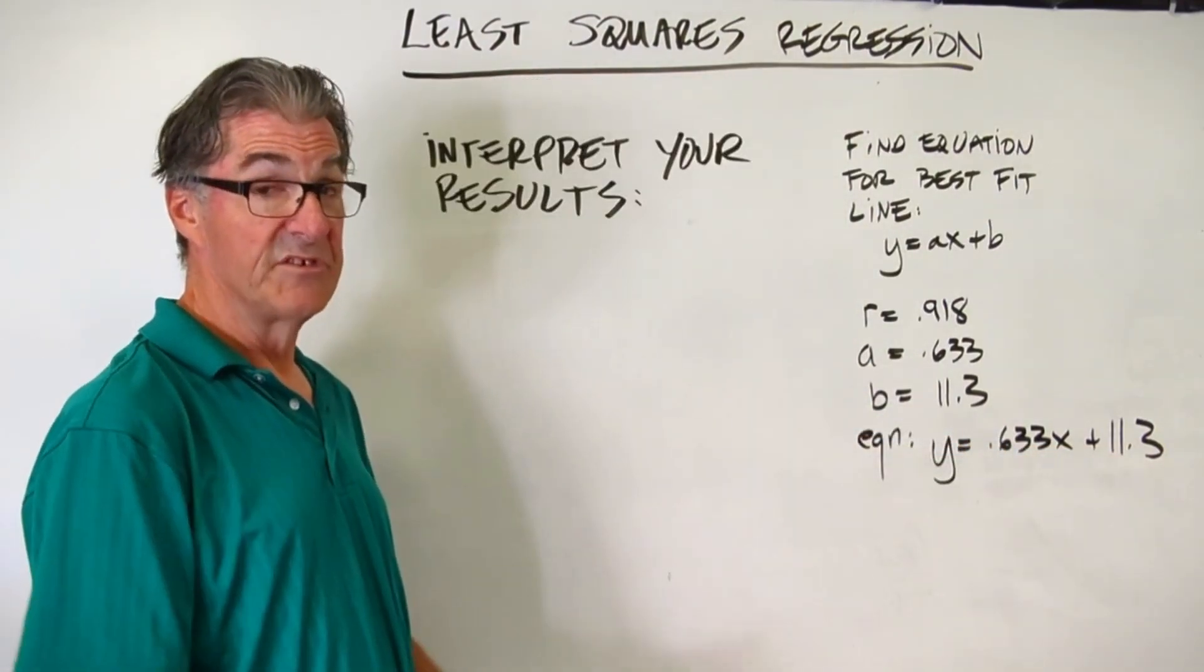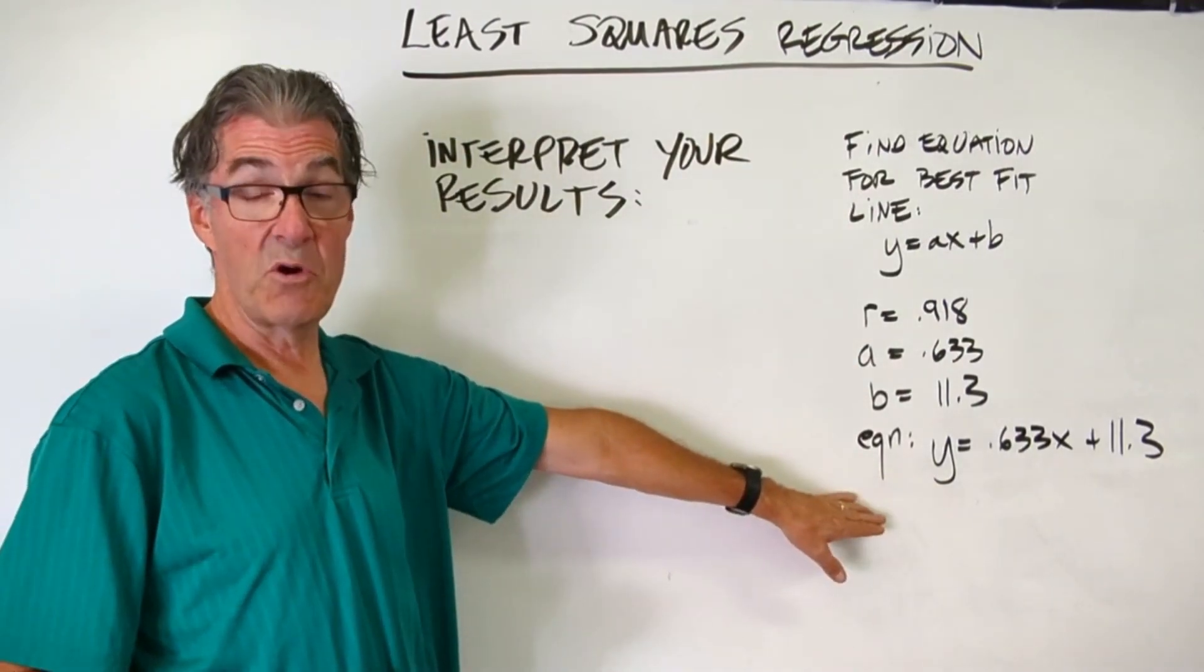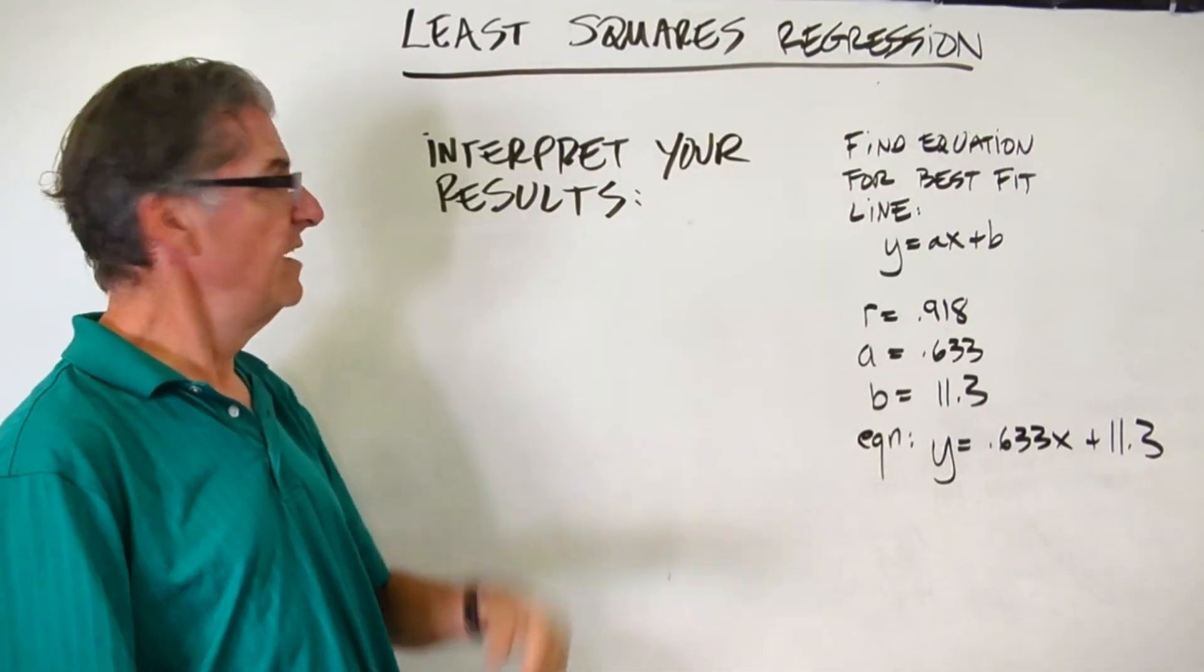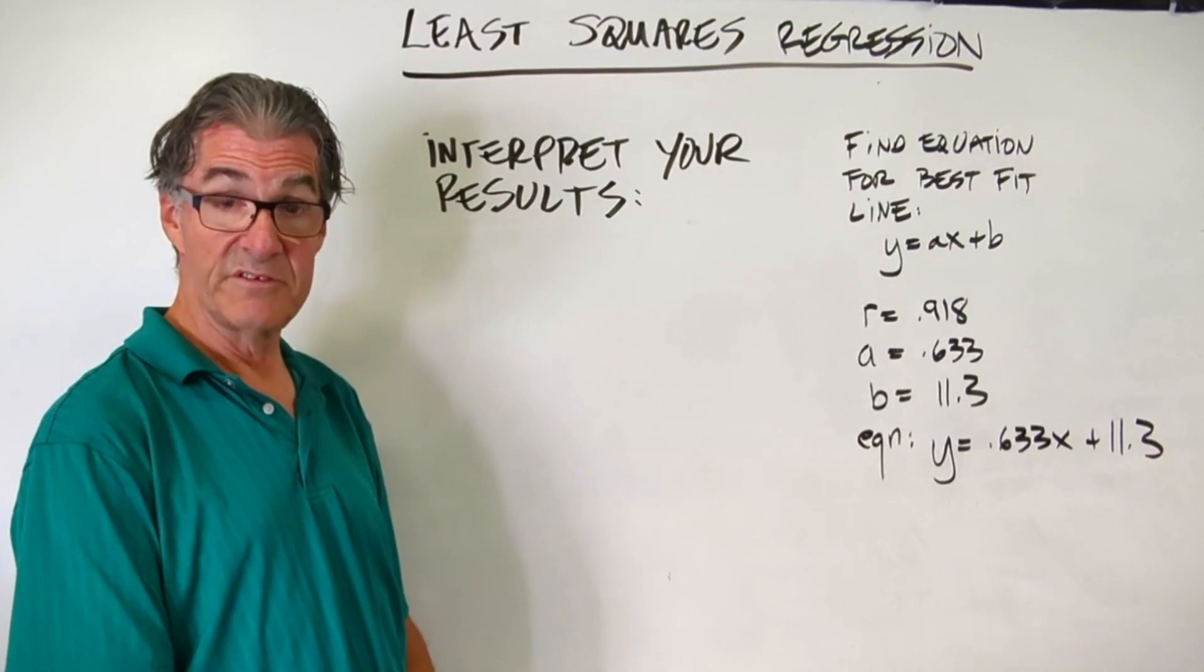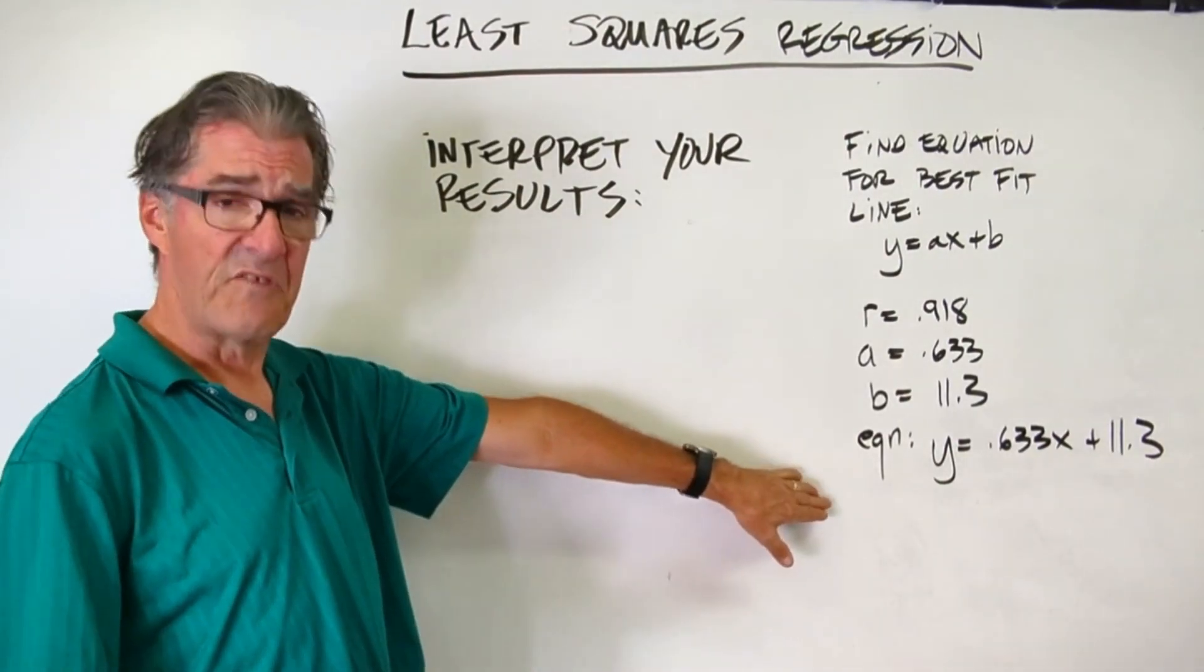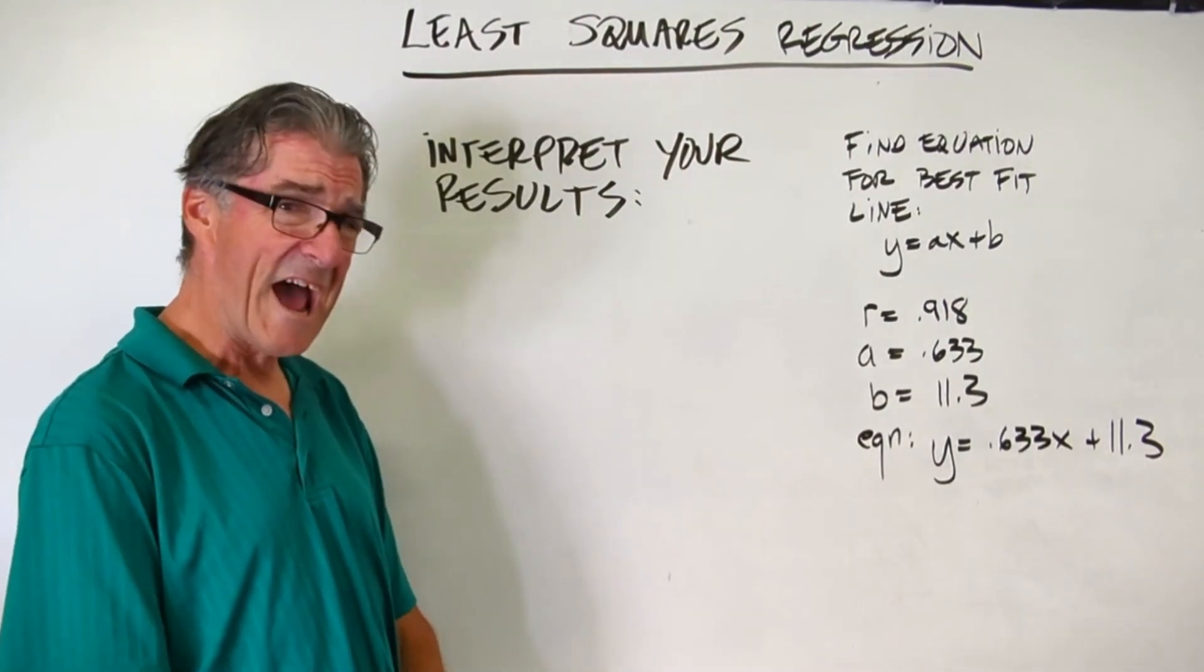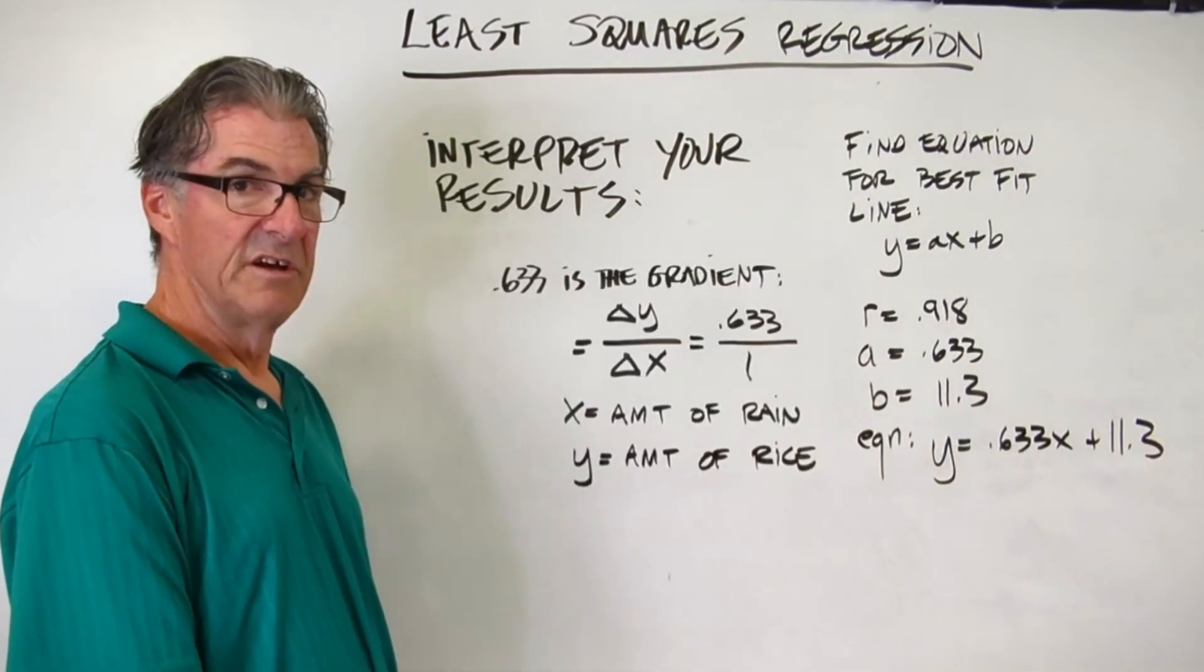Now, the IB is going to pose some questions. It's not just enough to come up with this equation. They're going to give you this prompt: Interpret your results. So I want you to think about this equation and these numbers that you've found. Pause the video, jot some things down, think real hard about what actually is going on.